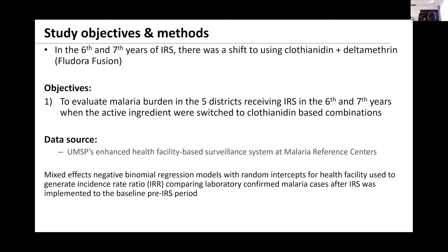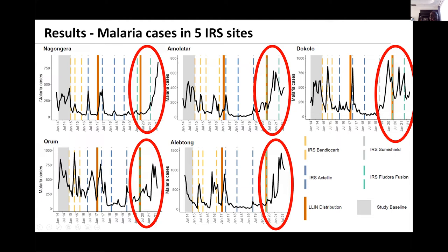Looking at the same graphs with an extension to 2021, with malaria cases on the y-axis, I've added cut bars to show when Fludora Fusion was introduced towards the end of 2019. In all five districts, we see an increase in malaria cases after the shift from Actellic to Fludora Fusion. This is a summary of the five sites over the duration since IRS was initiated.